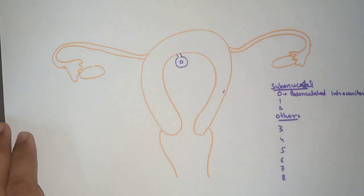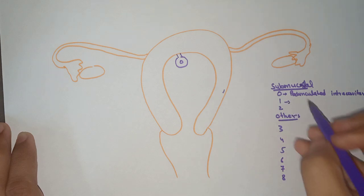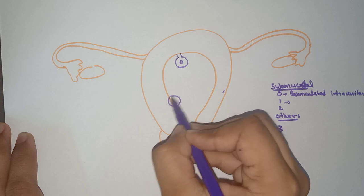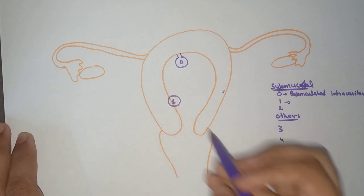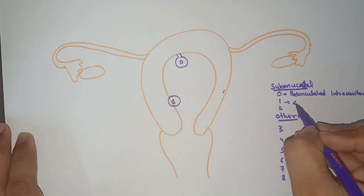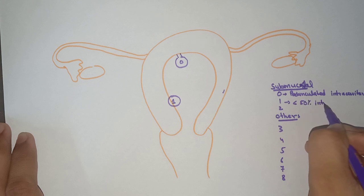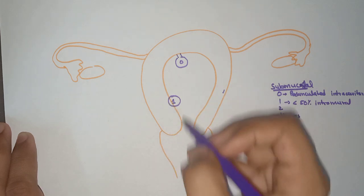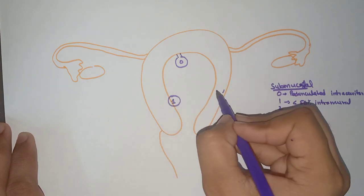Now coming to Type 1. Type 1 is less than 50% intramural. Now coming to Type 2. Type 2 is more than 50% intramural.